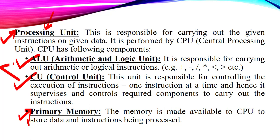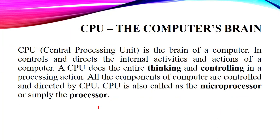The control unit supervises and controls the required components to carry out the instructions. Every component of our computer system, every data item, every processing — everything will be controlled by the control unit. Next we have primary memory, which is made available to the CPU so that it can store the data and instructions which are being processed. This primary memory is generally temporary in nature. Next we have to discuss about the most important functional component of the computer system — the CPU.